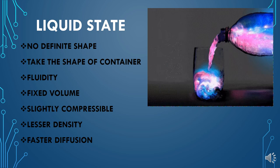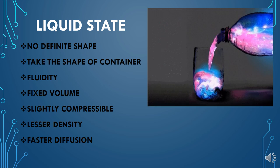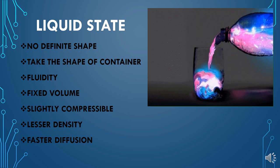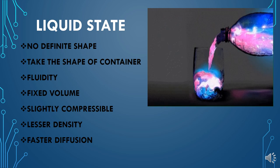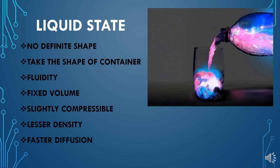Liquids have a fixed volume. Although the shape of liquids is not fixed, the volume is fixed because the inter-particle force of attraction in liquids is strong enough to keep particles within the liquid boundaries. The boundaries change shape but remain fixed. For example, 1 liter of water in a bottle occupies 1 liter; when transferred to another container, it still occupies 1 liter volume. Liquids have a fixed volume due to a sufficiently strong inter-particle force that keeps particles within the liquid itself.